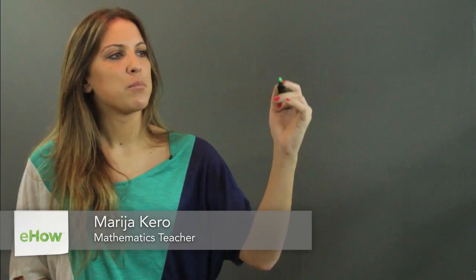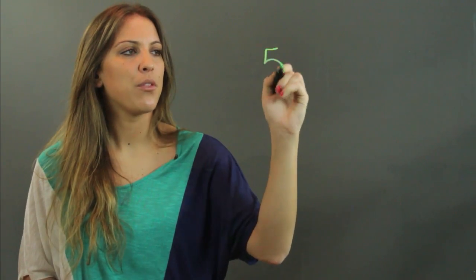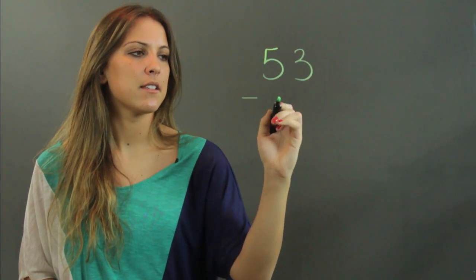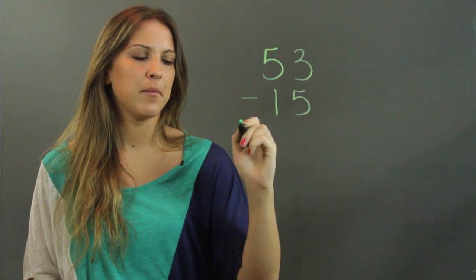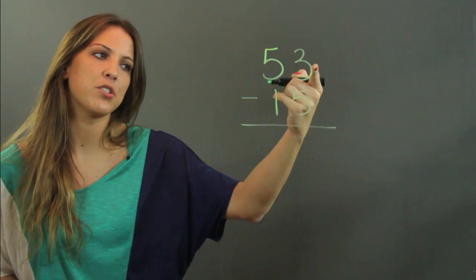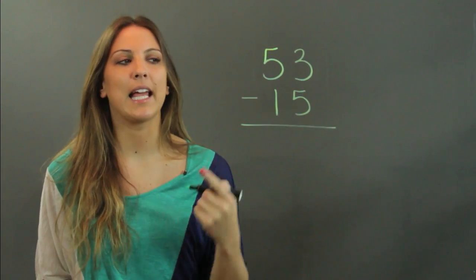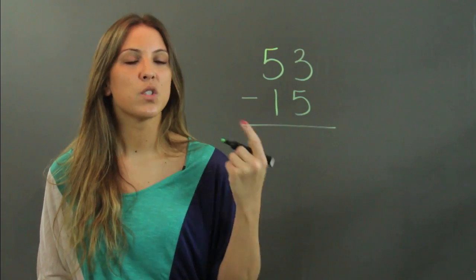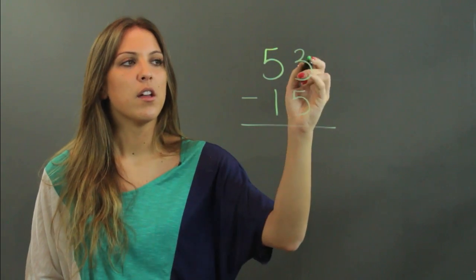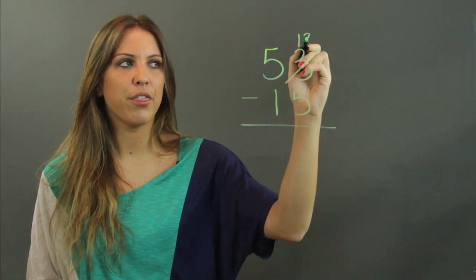So if we are going to subtract 53 minus 15, I start by trying to do 3 minus 5 and I realize that I can't take 5 away from 3. So what we're going to have to do in this case is borrow. You cross out your 3 and you make it a 13 instead.